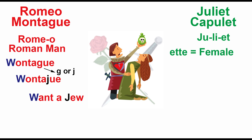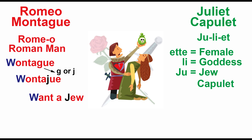Now looking at Juliet: the suffix '-et' means female, and 'Leia' or 'leia' is a reference to the goddess, while 'Ju' refers to a Jewish person. So Juliet is the Jewish girl. Her last name is Capulet — 'cap' referring to Catholic. So the Roman man wants the Jewish girl, and she wants the Catholic. We have a Roman Catholic in love with a Jewish girl. People who understand this language understand this book is not about feuding families — it's about opposing religions.